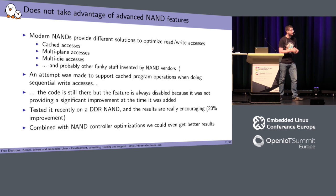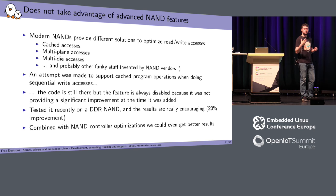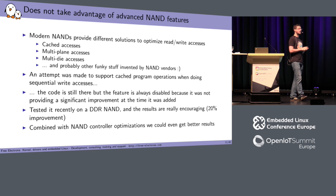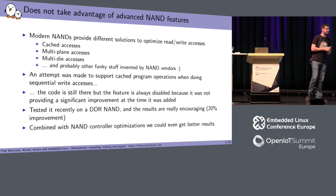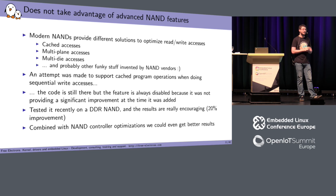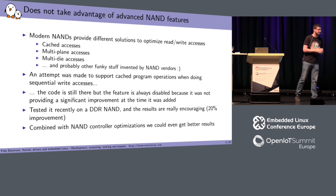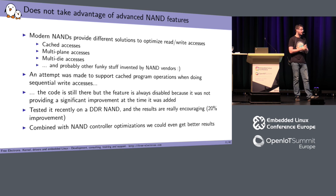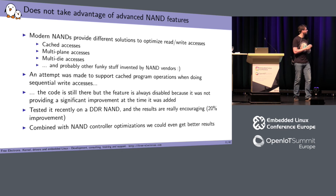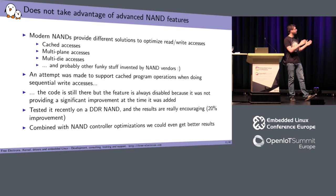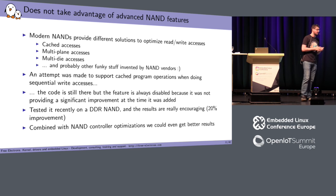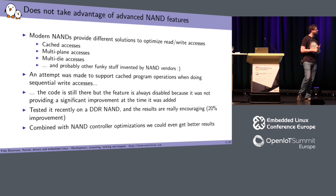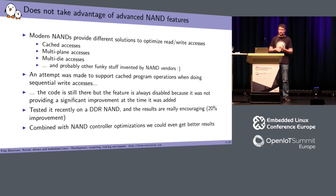Another thing that is missing is support for all the advanced features you can find on modern NAND chips. I'm talking about cached accesses, multi-plane accesses, multi-die accesses, and probably other things that NAND vendors provide. The goal is really to get the best performance we can. For example, I just tried on one of my setups using a DDR bus and cached accesses, and it gave pretty good results. We should really find a way to support those advanced features.